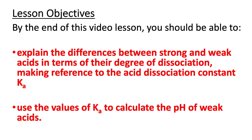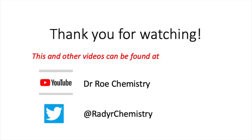So that concludes this video lesson. After watching this video, you should now be able to explain the differences between strong and weak acids in terms of their degree of dissociation, making reference to the acid dissociation constant Ka, and you should be able to use the values of Ka to calculate the pH of weak acids. Please check out our YouTube channel, Dr. Rho Chemistry, which has lots of GCSE, AS and A-level videos, and our Twitter site at Radachemistry.